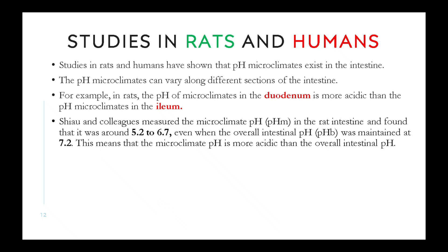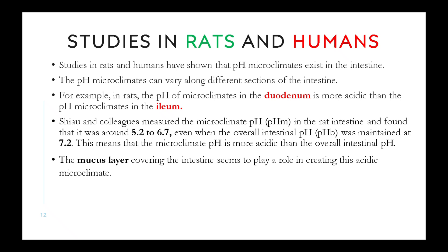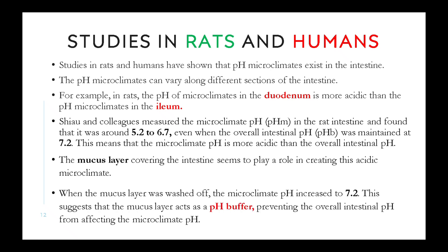Shaw and colleagues measured the microclimate pH (pH-m) in the rat intestine and found that it was around 5.2 to 6.7, even when the overall intestinal pH (pH-b) was maintained at 7.2. This means that the microclimate pH is more acidic than the overall intestinal pH. The mucous layer covering the intestine seems to play a role in creating this acidic microclimate. When the mucous layer was washed off, the microclimate pH increased to 7.2, suggesting that the mucous layer acts as a pH buffer, preventing the overall intestinal pH from affecting the microclimate pH.